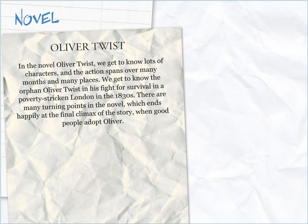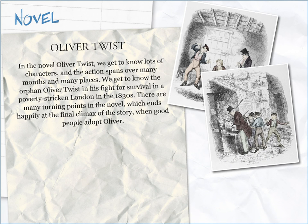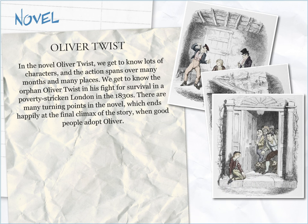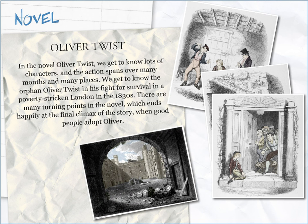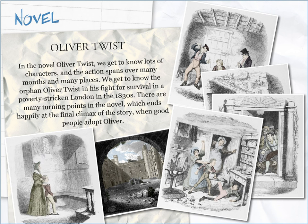Example: In the novel Oliver Twist, we get to know lots of characters, and the action spans over many months and many places. We get to know the orphan Oliver Twist in his fight for survival in a poverty-stricken London in the 1830s. There are many turning points in the novel, which ends happily at the final climax of the story, when good people adopt Oliver.